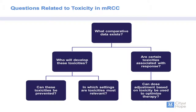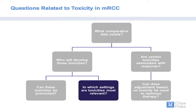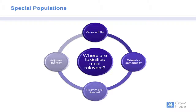If we can't prevent toxicities, how about identifying settings in which they are most relevant? Dr. McKay presented a case of an older adult with metastatic RCC — a setting where therapy-related toxicities are particularly important. This also applies to patients with extensive comorbidities, including cardiac toxicities. Toxicities are also very relevant at the extremes of therapy: patients with localized disease contemplating adjuvant therapy, and those who are heavily pretreated.